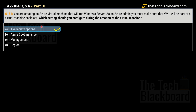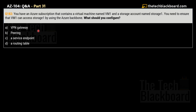Moving to question 182: you have an Azure subscription containing a virtual machine named VM1 and a storage account named Storage1. You need to ensure that the virtual machine can access Storage1 by using the Azure backbone. What should you configure? Options are: A) VPN Gateway, B) Peering, C) A Service Endpoint, D) A Routing Table.